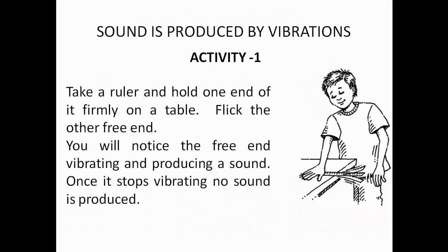Sound is produced by vibrations. To understand this, we follow Activity 1. Take a ruler and hold one end of it firmly on a table. Flick the other free end. You will notice the free end vibrating and producing a sound. Once it stops vibrating, no sound is produced. You can do this activity at home — if you hit any steel dish, sound will be produced, and as long as vibration is there, you will get sound. Once vibration stops, sound also stops.